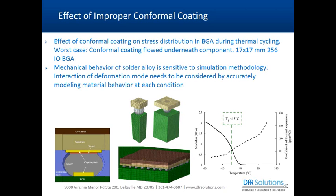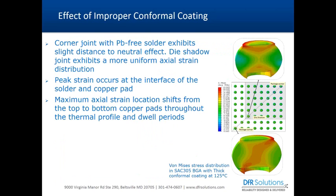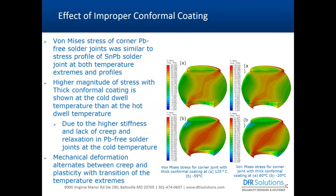Here is the initial modeling result — a quarter-symmetric top-view model. On the top side, BGA balls underneath the die shadow show a more uniform distribution accounting for an axially-driven stress state. The package corner ball with the largest distance-to-neutral-point shows the classical cyclic shear behavior. This is illustrated for SAC305 solder. We also performed this experiment for 63/37 thin lead solder alloy, and will show cross-sections shortly.